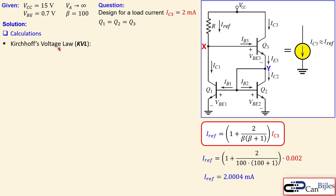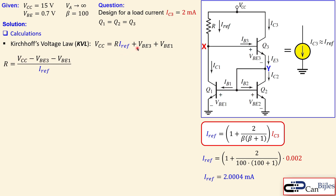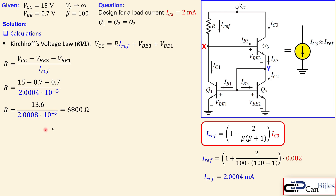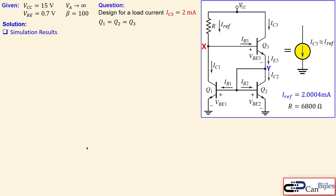Now we calculate the resistor R. Applying KVL: VCC = R·I_ref + VBE3 + VBE1 (or VBE2, since they're the same). So R = (VCC − 0.7 − 0.7) / I_ref = (15 − 0.7 − 0.7) / 2.0004 mA = 6.8 kΩ exactly. Our design is now complete.